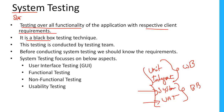System testing is a black box testing technique because we don't need to know the code or what the developer has written inside. We don't know internally what happens. We only test at a very high level — how the customer uses that application — and those scenarios we will test. That's the reason we call this a black box testing technique.